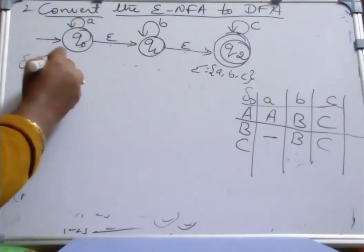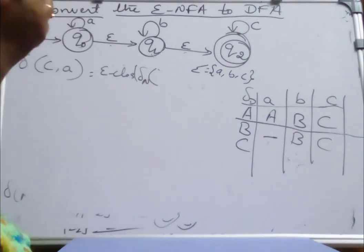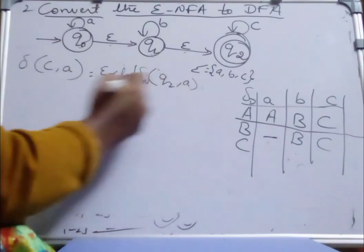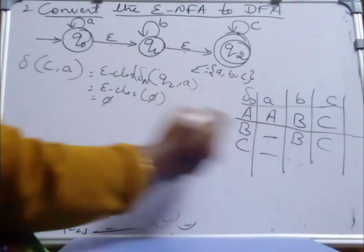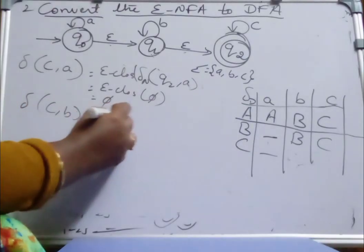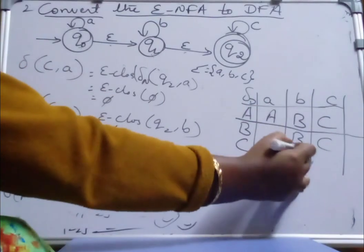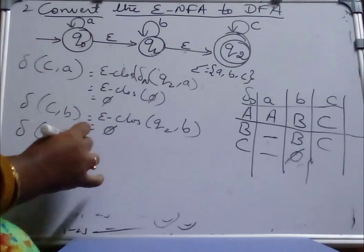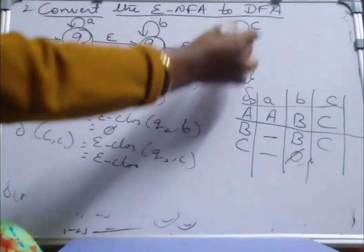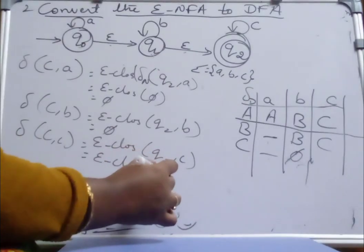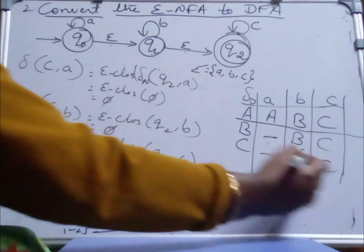Find transition of C on a: Epsilon closure of {Q2} on a — Q2 on a has no transition, so it is null. C on a is null. Similarly, C on b equals Epsilon closure of Q2 on b — Q2 on b has no transition, it is null. C on b is null. Find transition of C on c: Epsilon closure of Q2 on c — Q2 on c is going to Q2 itself. Epsilon closure of Q2 is Q2, which is the same state C. So C on c is moving to C itself.